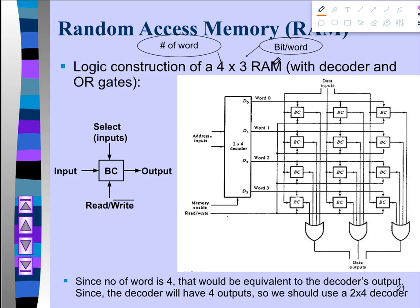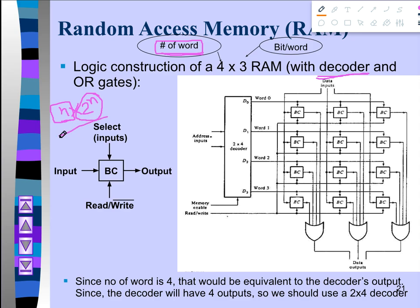Since there are four words, we can find out the outputs of the decoder. The number of decoder outputs is the same as the number of words, so the decoder should have 4 outputs. We know the decoder follows the rule of n to 2^n — meaning if there are 2^n outputs, the input should be n. So with four outputs, the number of inputs would be 2.